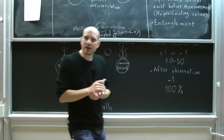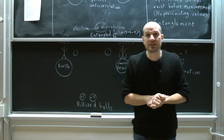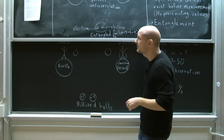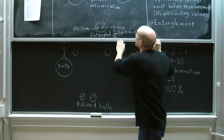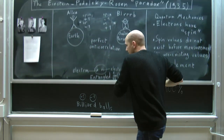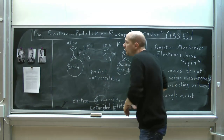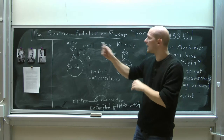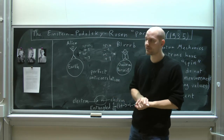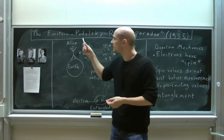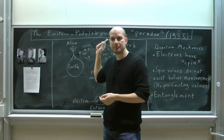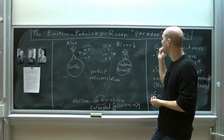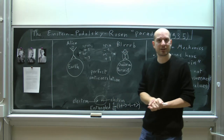So we've talked a little bit about the concept of locality. What I'd like to talk about next is the Einstein-Podolsky-Rosen paradox, which is due to Albert Einstein, Boris Podolsky, and Nathan Rosen, and was published in 1935.